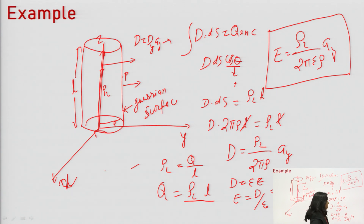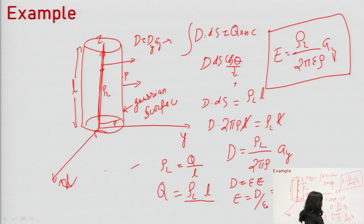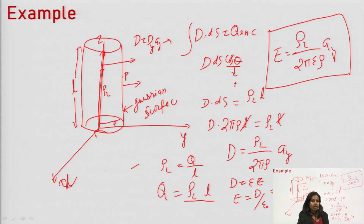The difference is that here we got all these things very easily. However, in Coulomb's law, we need to derive it in a long way. This is the benefit of using Gauss law — Gauss law is way simpler than Coulomb's law. That is why we are using it for symmetrical configurations.